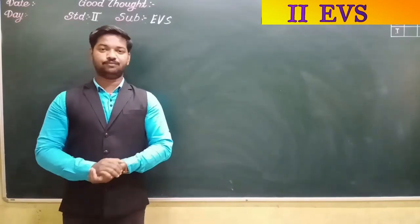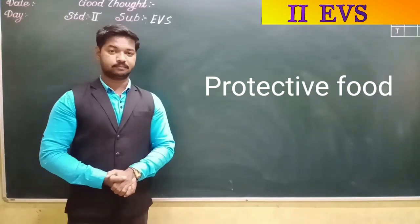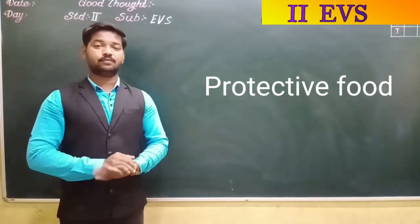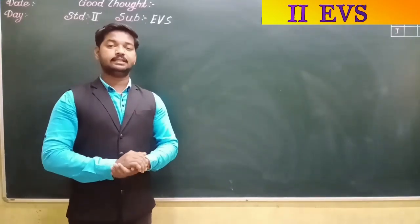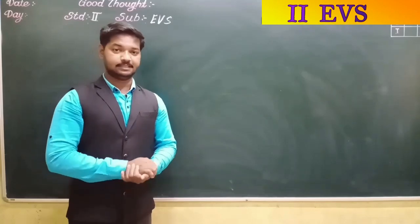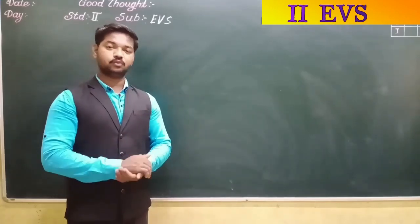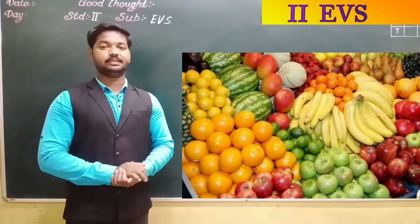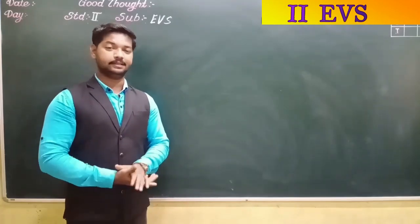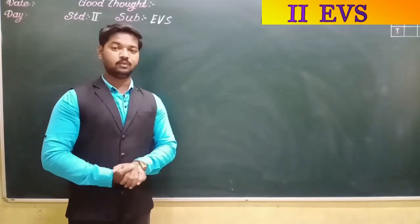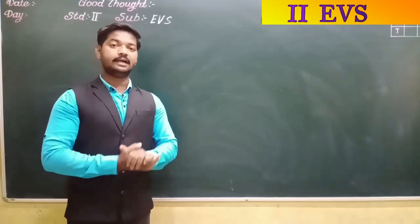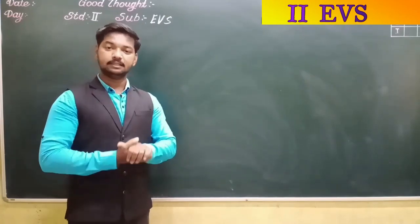Now the next kind of food is protective food. These kinds of food protect us from various diseases. Examples include fruits and green leafy vegetables. So we have to include all these kinds of foods in our diet.